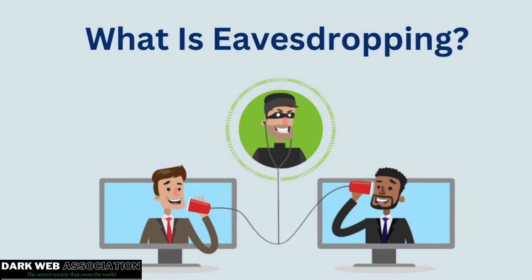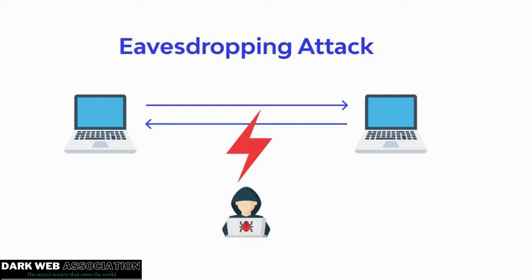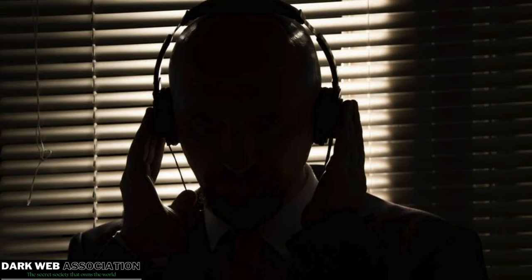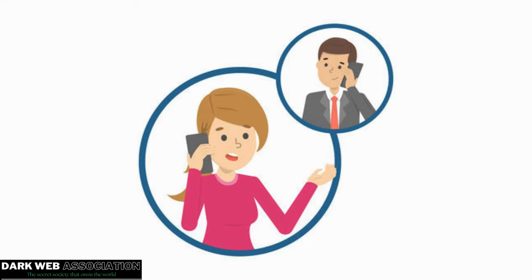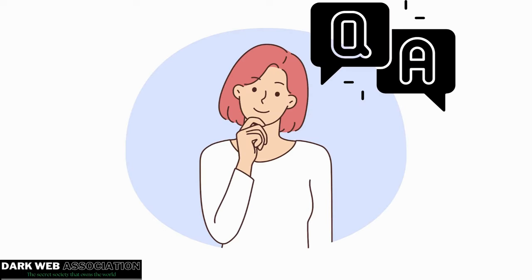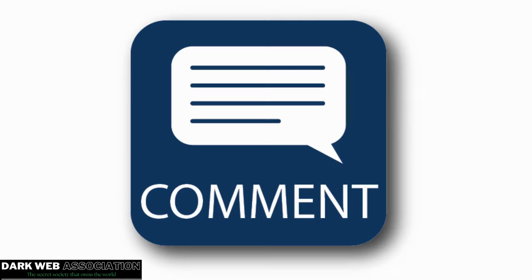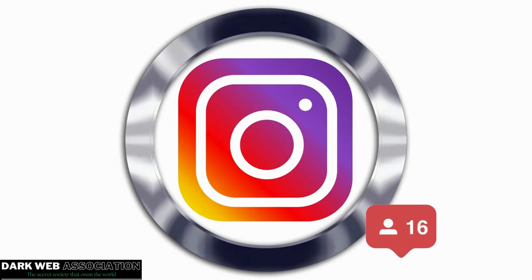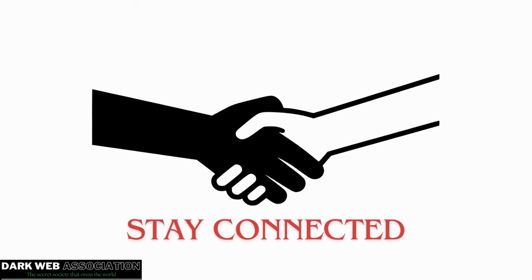An eavesdropping attack is when two people are talking and a third person is listening. It generally involves accessing a telephonic network — if one person is talking to another over a telephonic network and a third party listens through network traffic, that is an eavesdropping attack. That was today's topic. If you have any doubts, comment or text us on Instagram and stay connected for more updates.